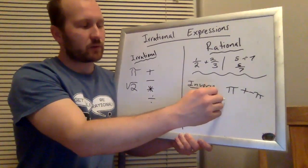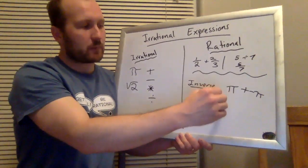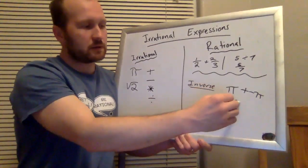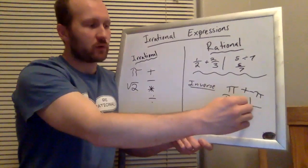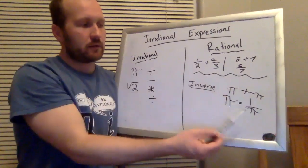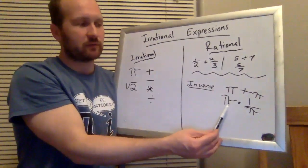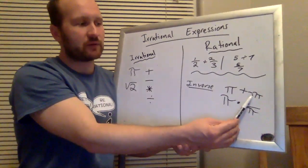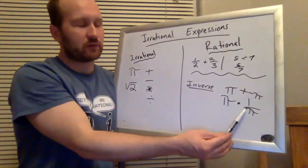Same thing with if I were to take pi times one over pi. That's the inverse multiplicatively of pi. So that's our additive inverse, this is our multiplicative inverse.